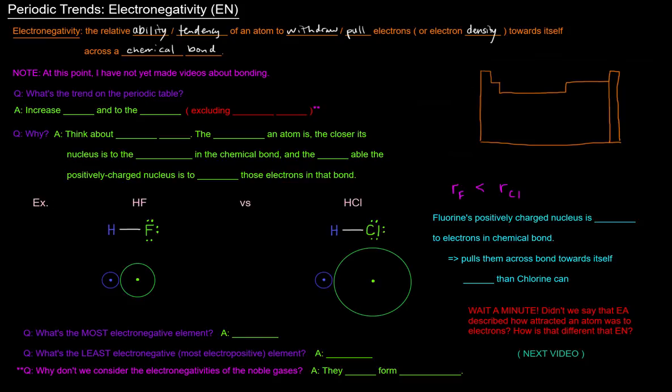So what's the trend on the periodic table? Well, electronegativity of an atom or an element increases up and to the right.